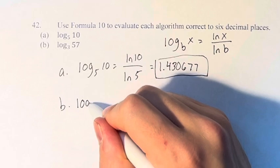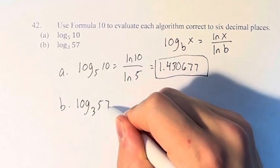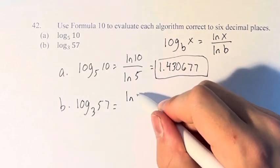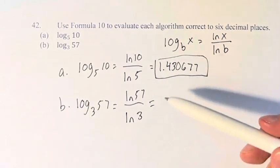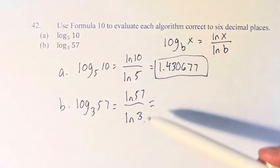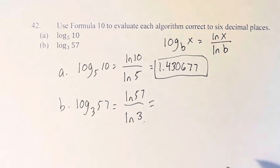Similar thing with b. Log base 3 of 57 is equal to the natural log of 57 over the natural log of 3. Base is in the bottom, if that helps you remember which one to put on top and bottom in this fraction.